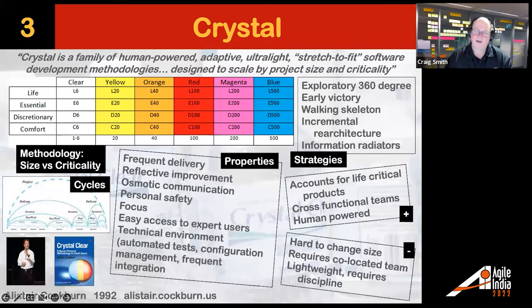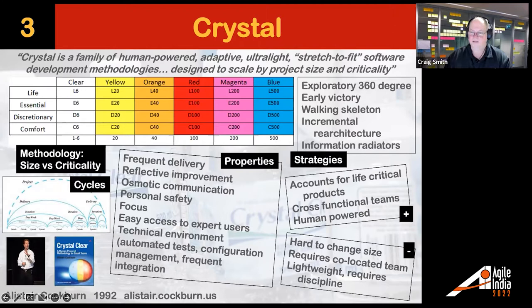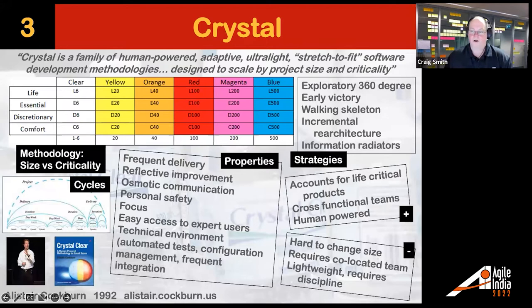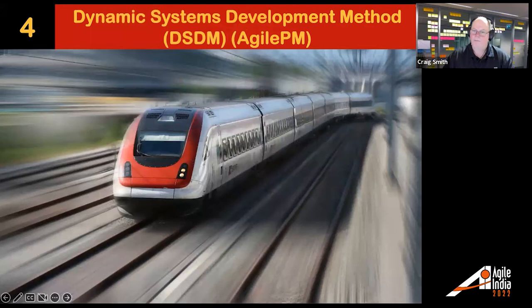Crystal is the work of Alistair Cockburn, going back to the early 1990s, popularized by his book Crystal Clear. It was supposed to be a set of books — Crystal Yellow, Orange, Red, Magenta, and Blue — where depending on team size and the type of work (comfortable, discretionary, essential, or life-threatening), you'd use a different flavor of Crystal. You might not see it much now, but concepts like frequent delivery, good technical environment, and cross-functional teams have roots in Crystal Clear.